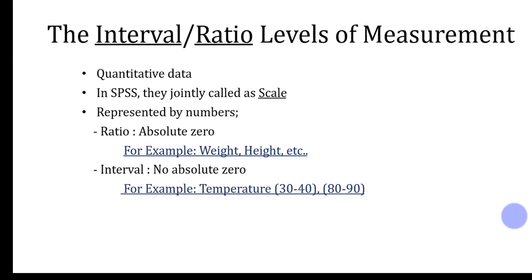For example, as you can see, the example of ratio first: weight, height. If the weight is equal to zero, it means there is an absence of weight. There is no weight. If the height is equal to zero, it means there is no height. It's zero. So here, in ratio, there is an absolute zero.